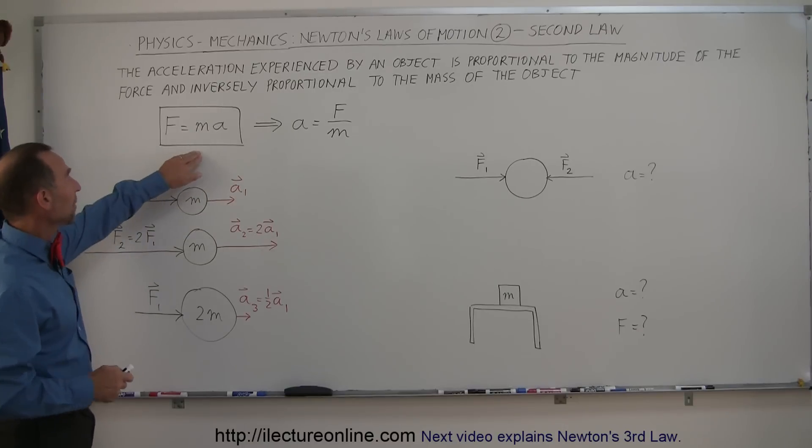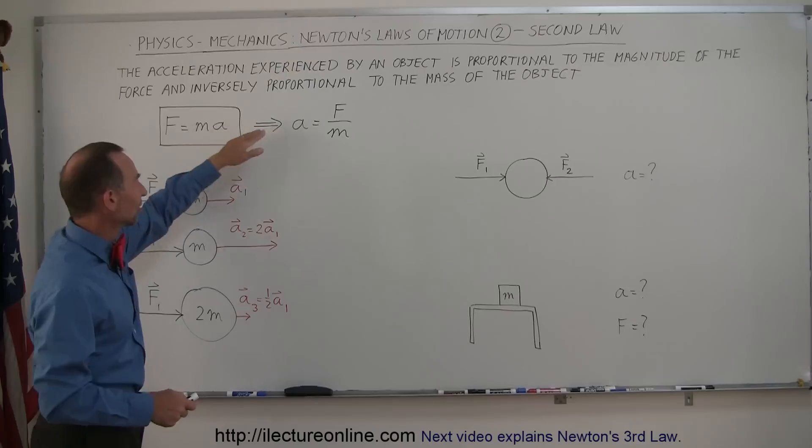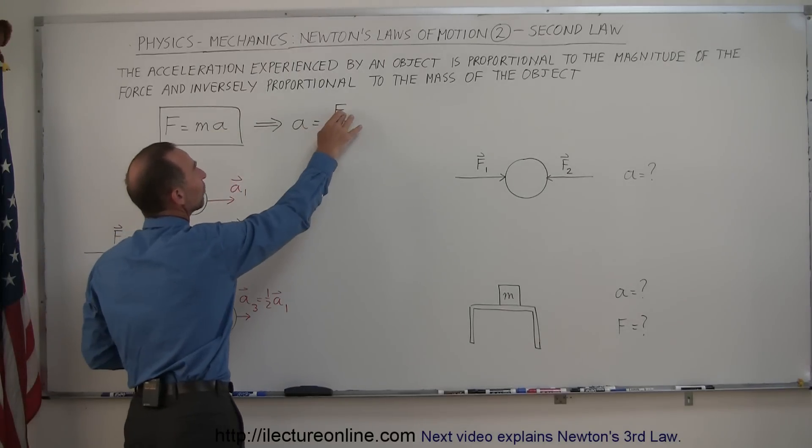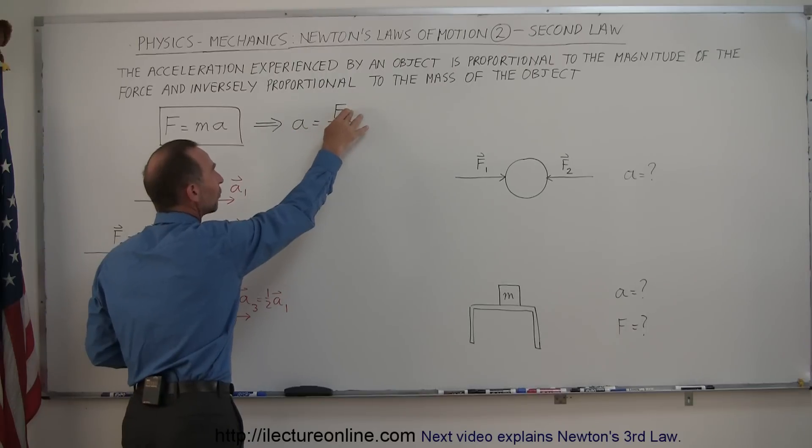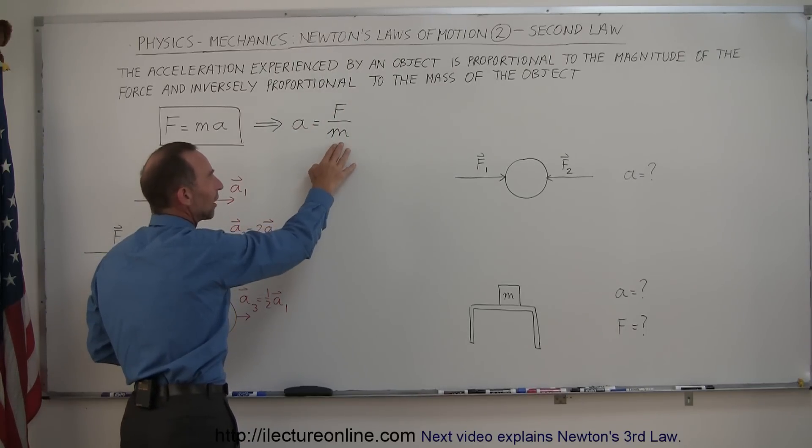So if we take F equals ma and rewrite it as acceleration equals F over m, which is the exact same equation written differently, then we realize that the acceleration depends on the force proportionally. So if we double the force we get twice the acceleration, and inversely proportional to the mass—so if we double the mass we only get half the acceleration.